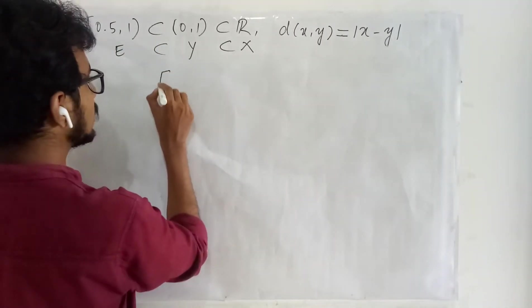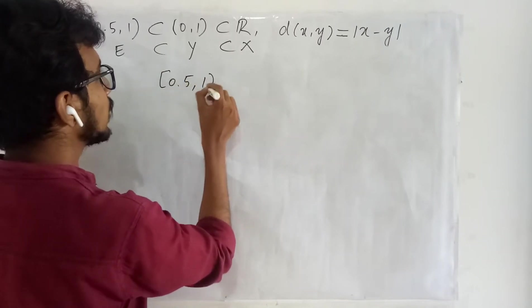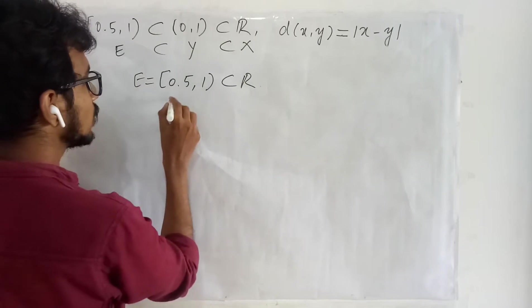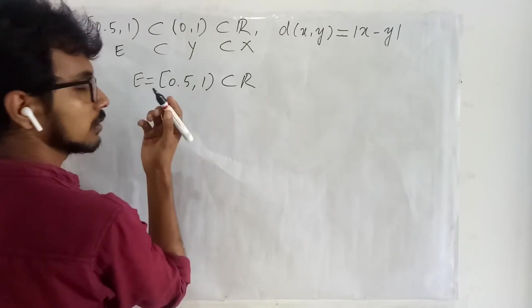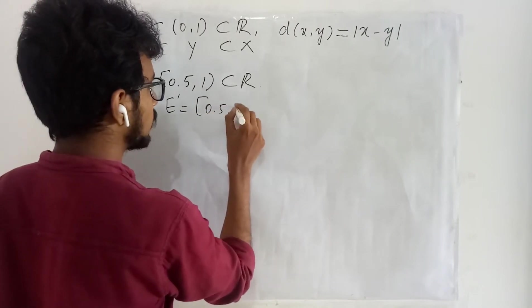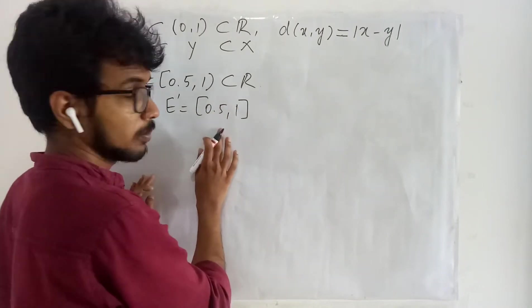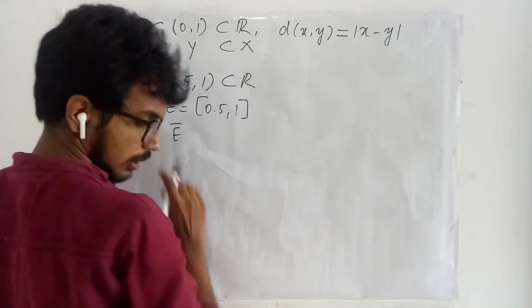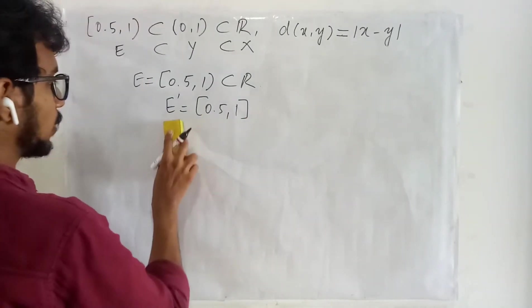And finally consider this E to be a subset of R and try to find out the closure of it, or you just try to find out the limit points of it. If you examine for the limit points you get this to be our limit point set and your E closure, this to be our limit point set.